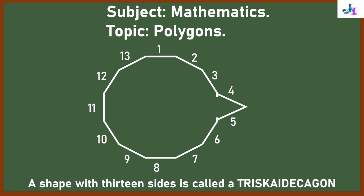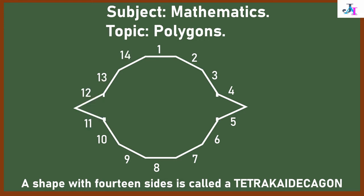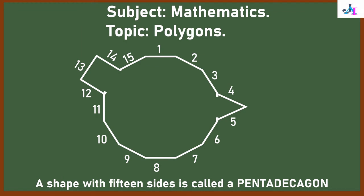14 sides shape is known as tetrakaidecagon. Can you see the sides? There are 14 in number here. Let's move to the next shape. This is a shape with 15 sides and it is known as pentadecagon.